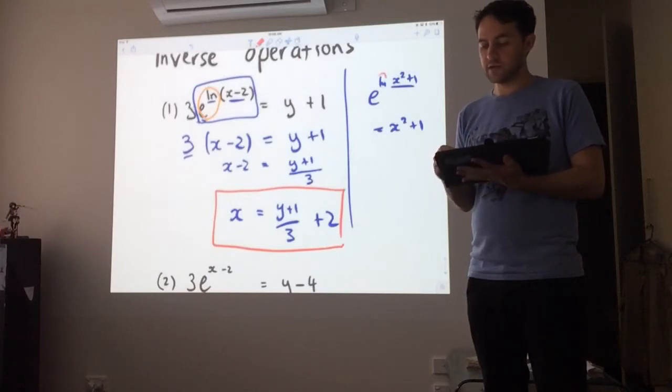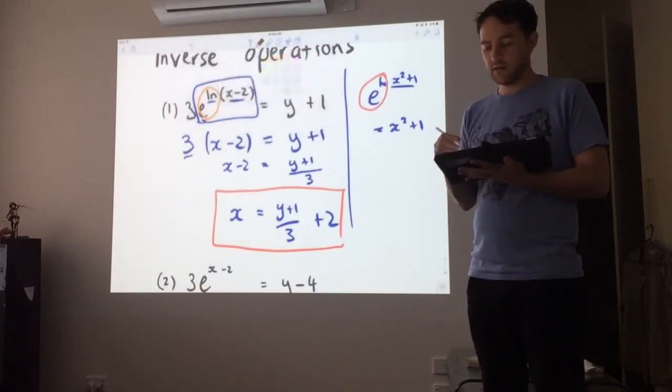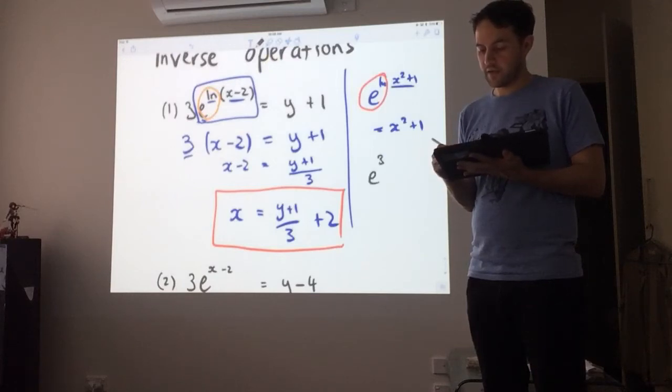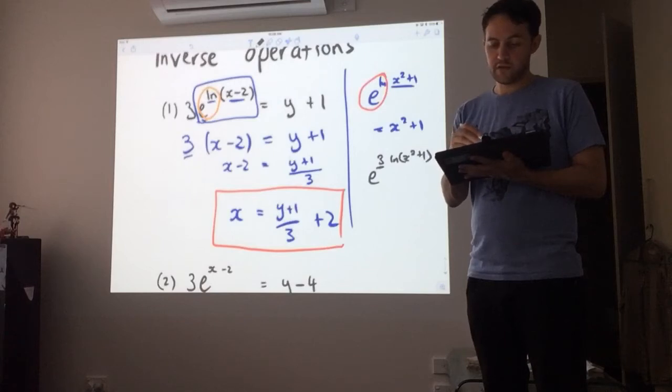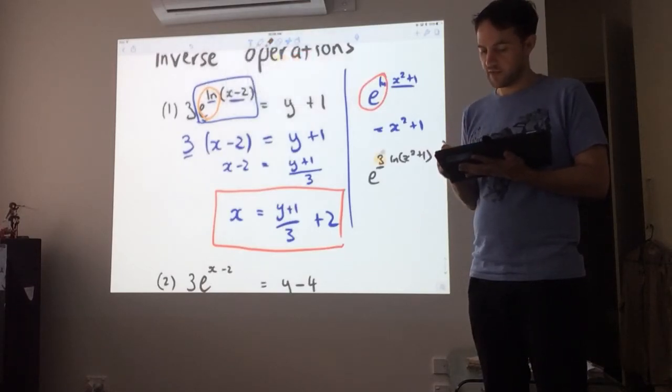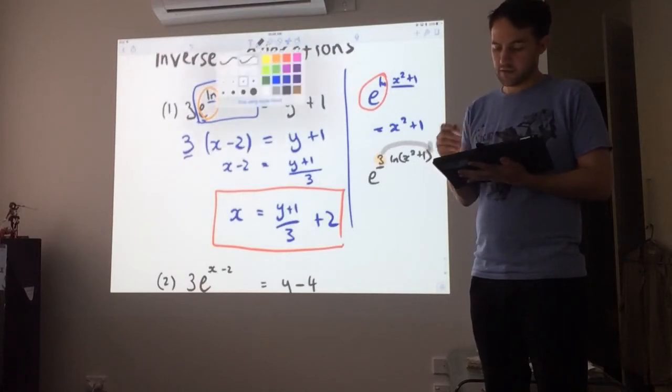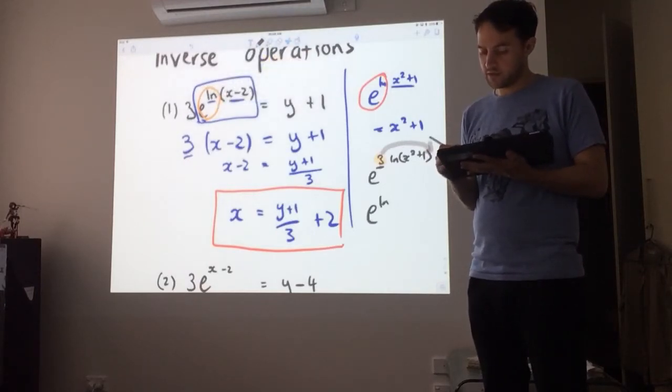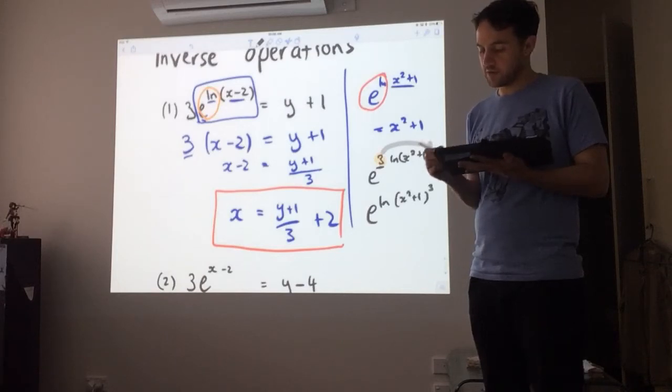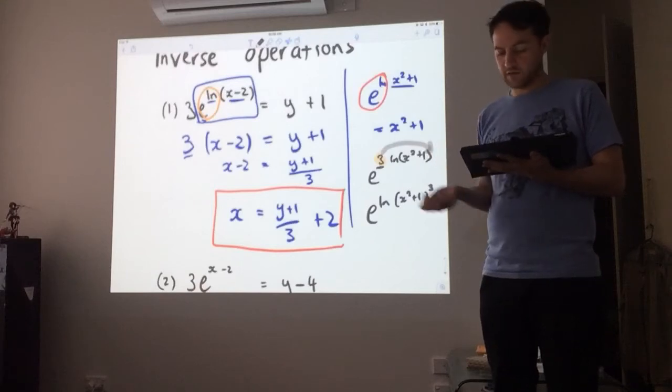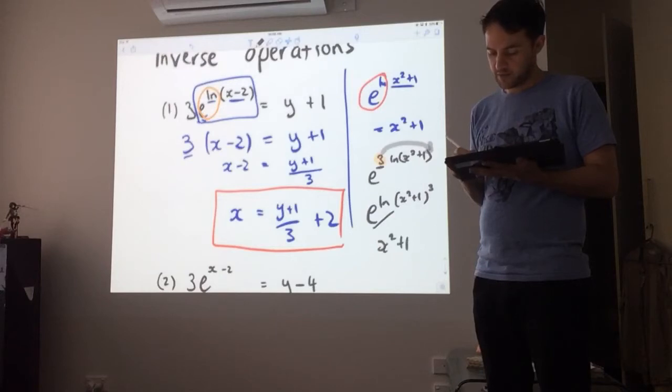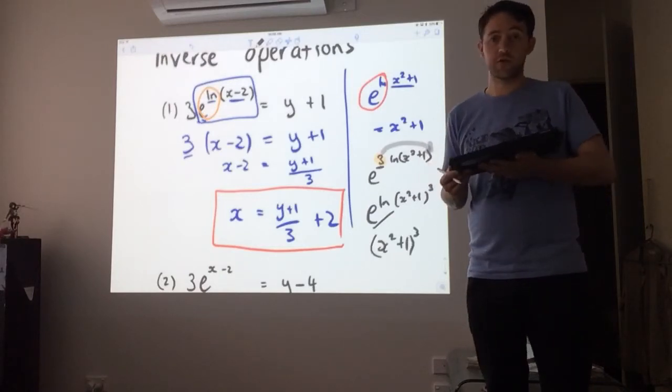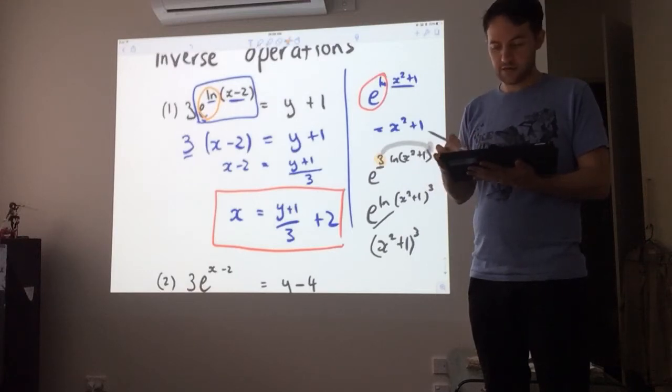So the key thing that we use here is just that e to log cancels out. Again, if we had something different, if we have, say, e to the 3 log of x squared plus 1, in this case, again, we probably want to do something with this 3. So often, probably the easiest or most straightforward thing to do is move that 3 up to here. And so in that case, we get e to the log of x squared plus 1 cubed. So remember, this rule comes from our log laws. And then we get the cancelling out of these, and so it becomes x squared plus 1 cubed. That's probably the most straightforward way to do it. Okay, let's continue on with these questions.